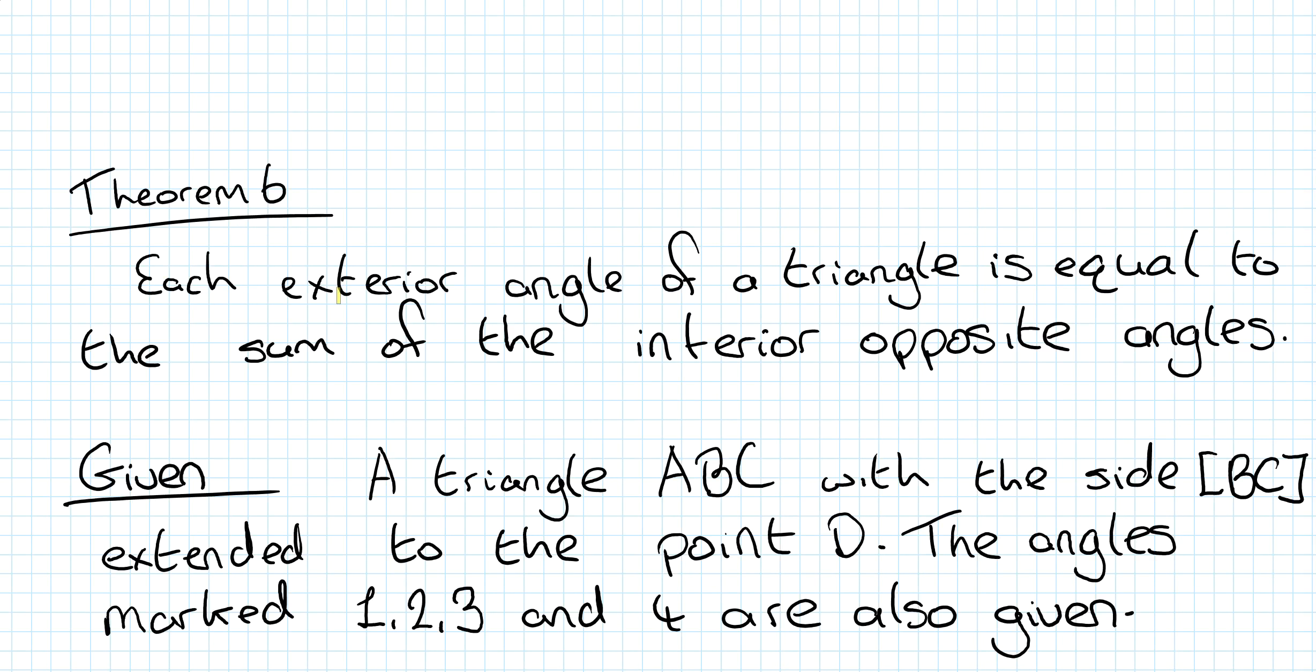Alright, so looking at Theorem 6 then. Theorem 6 is probably another theorem that you're familiar with. It's that each exterior angle of a triangle is equal to the sum of the interior opposite angles. So remember, sum means addition.